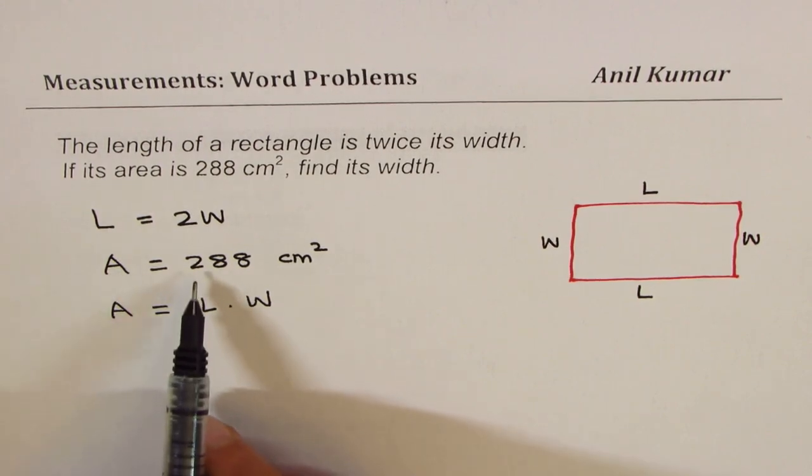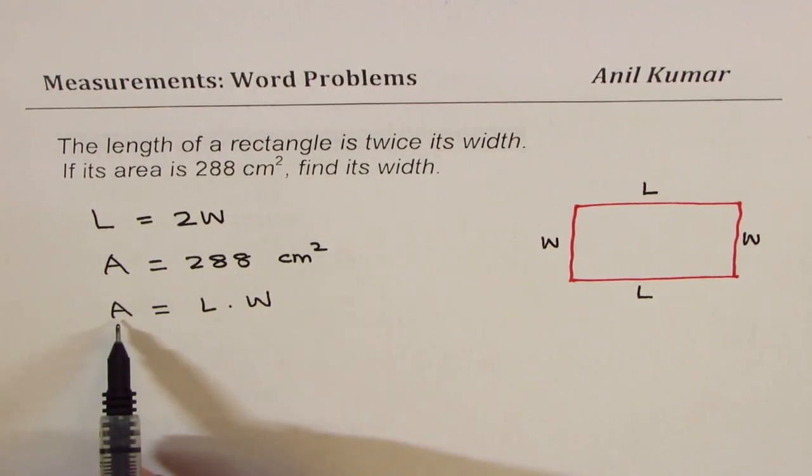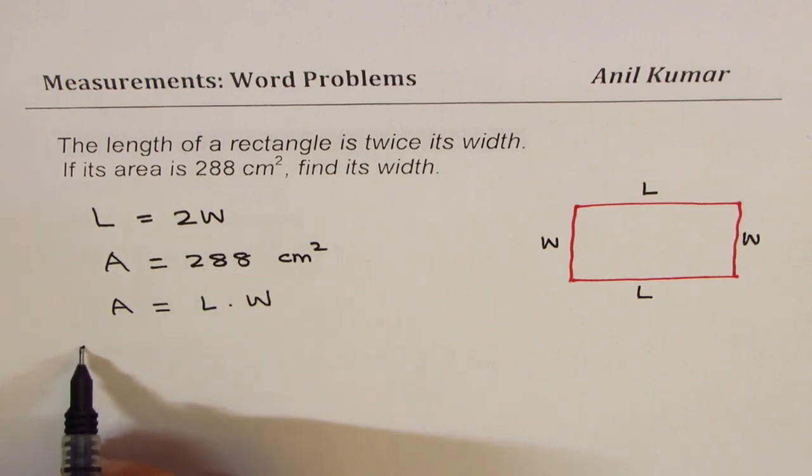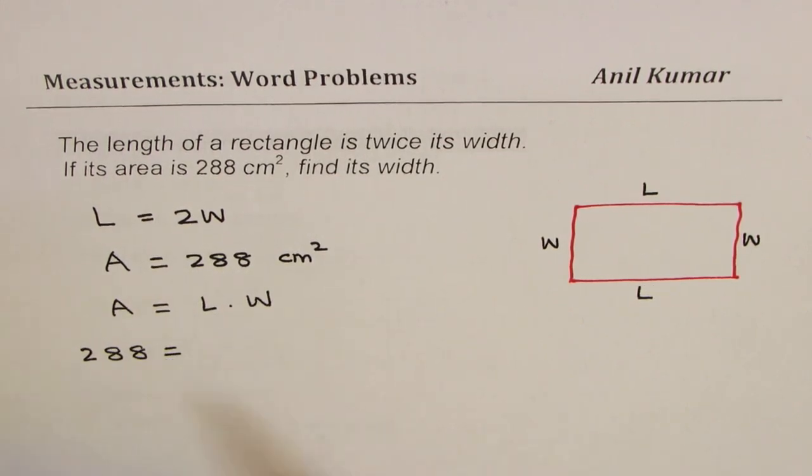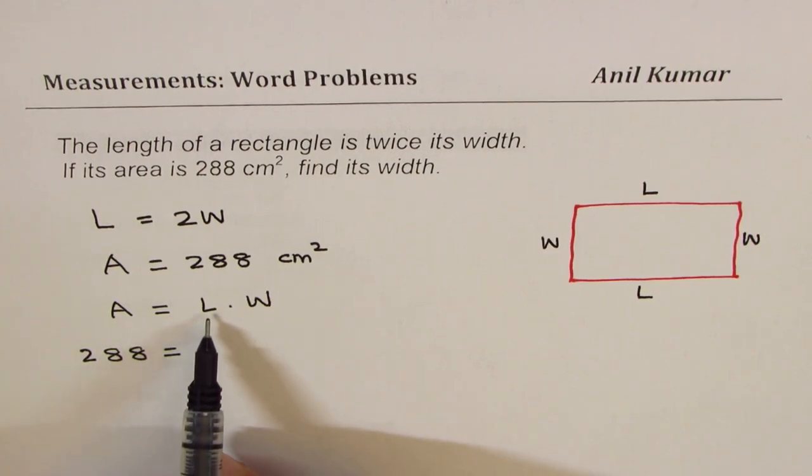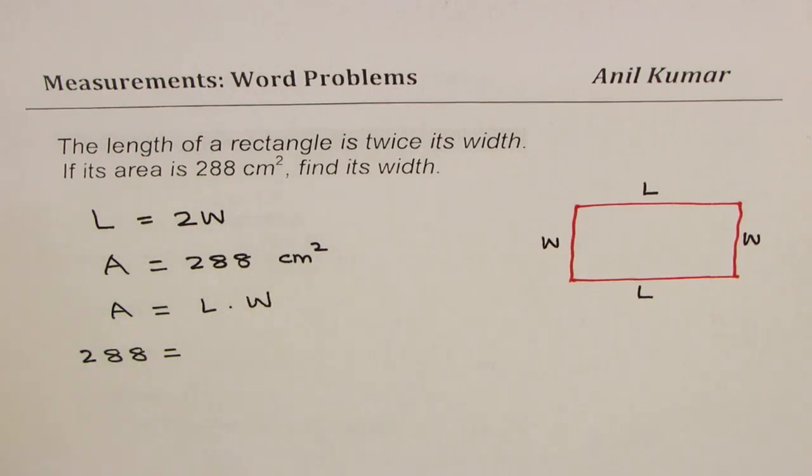Now we know area is 288, so let me write instead of A, 288. So 288 is the area. We have two variables, length and width. Let's write length as 2W. See, in the first statement we defined our variables length and width, right? And we related them. We are saying length is two times width, so I replace